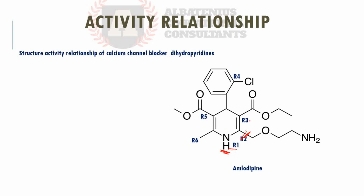The alkoxycarbonyl group gives more optimal activity at R3 and R5. Variation in the chain length or the branching in the alkyl components of the ester groups will decrease the activity.